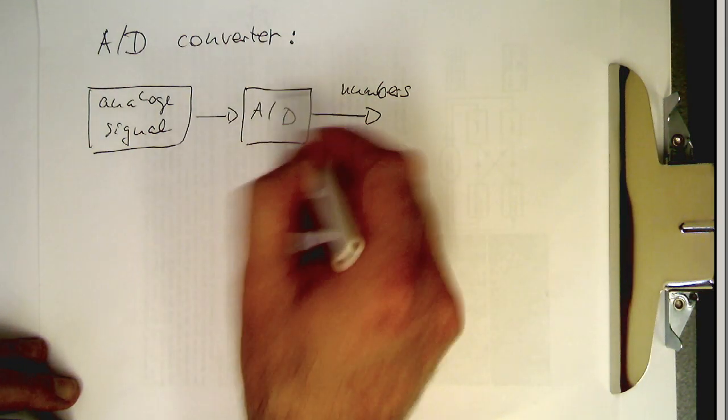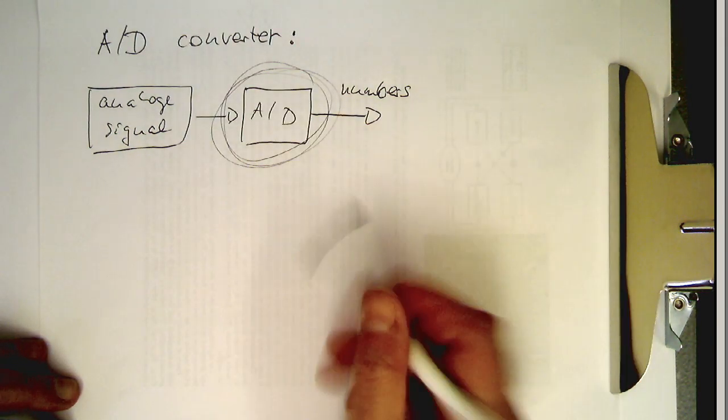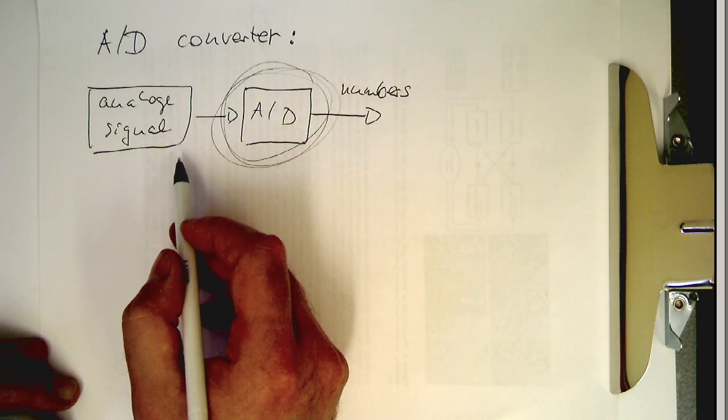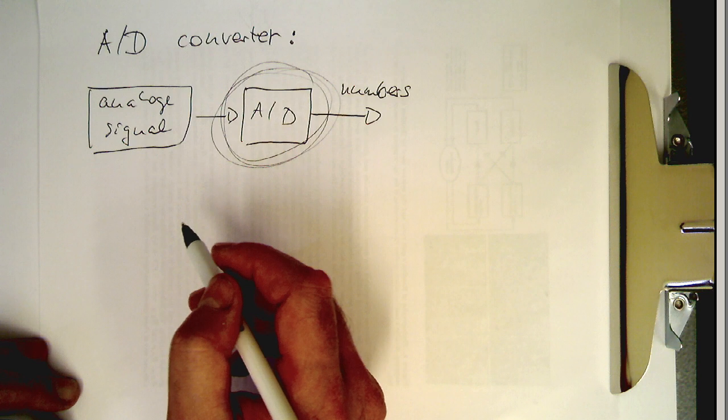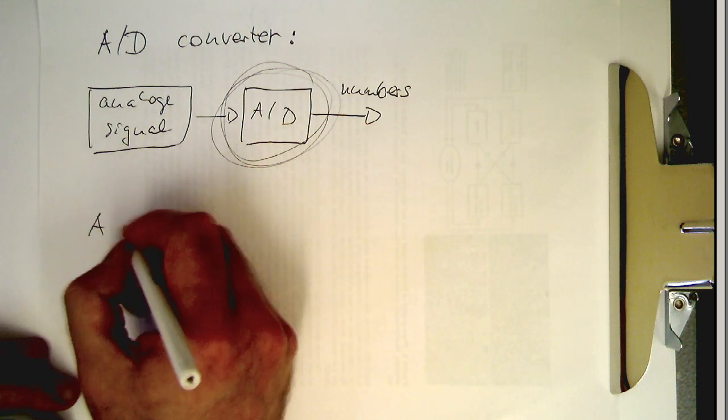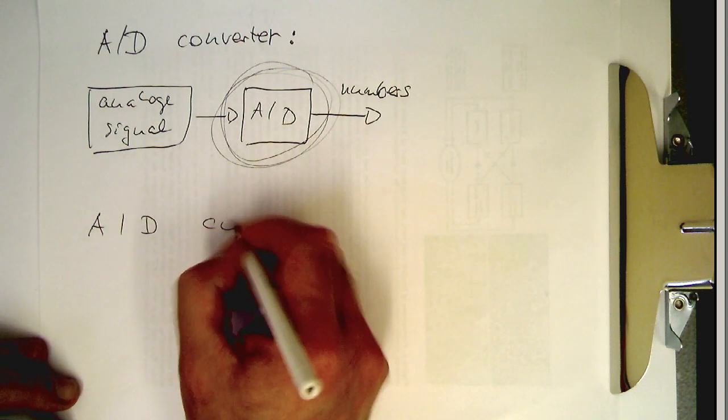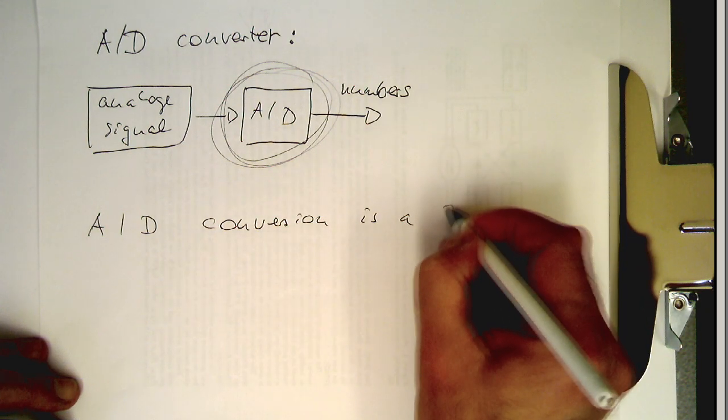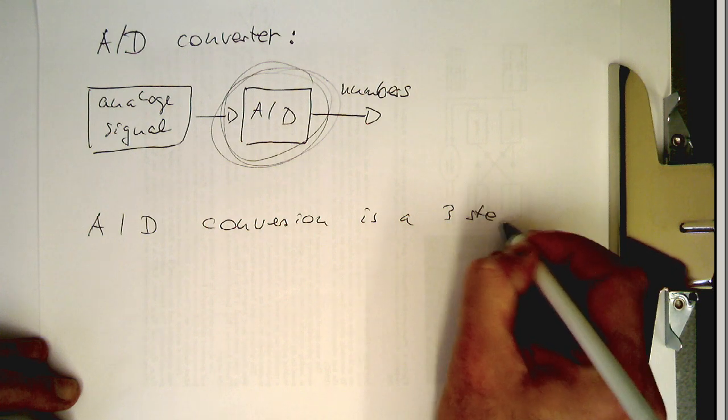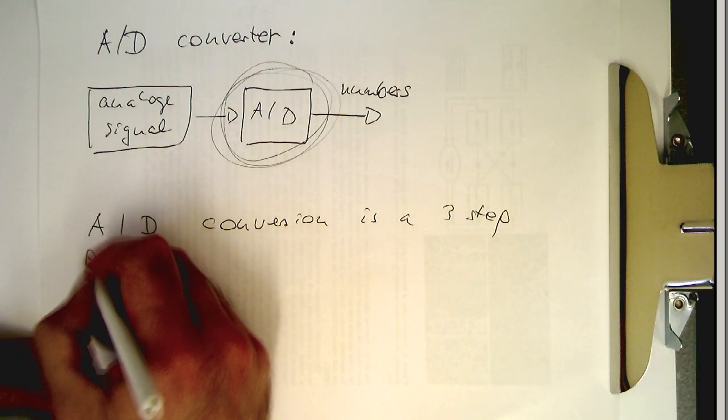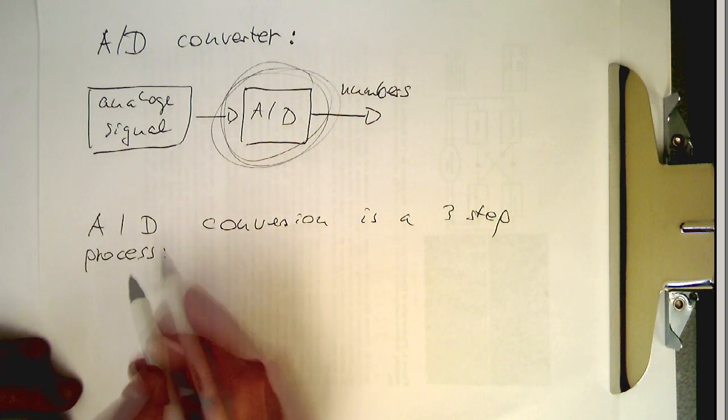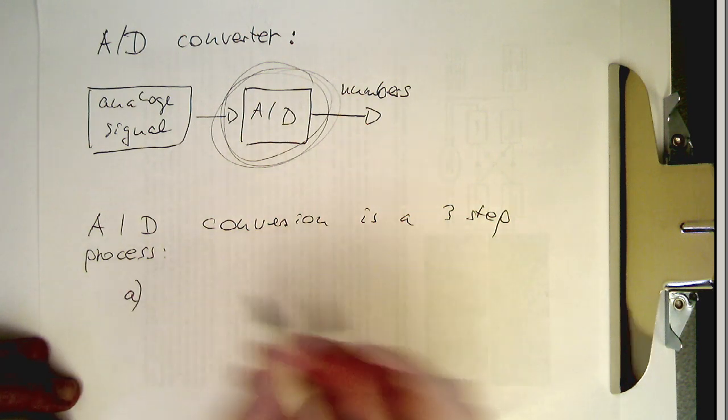So what you would like to look at is here at the so-called A/D converter and what is it doing to the analog signal. So that's a three-step process. A/D conversion is a three-step process, and so let's look at the first step.